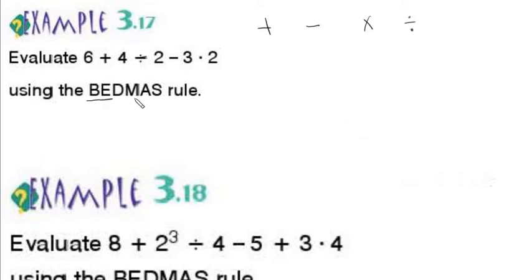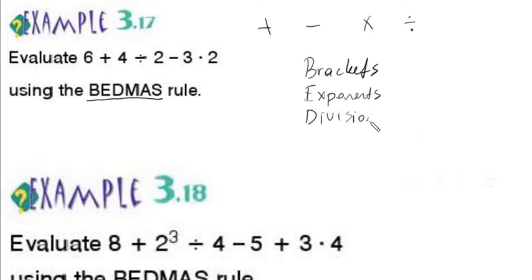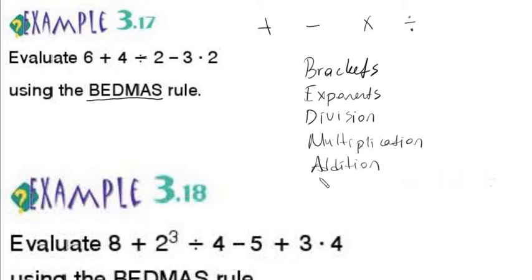Do you know what the BADMAS rule is? B for brackets, E for exponents, D for division, M for multiplication, A for addition, and S for subtraction. As you can see, this covers addition, division, subtraction, and multiplication.